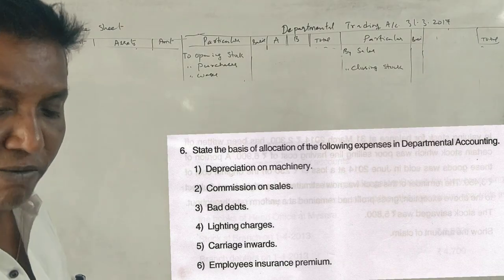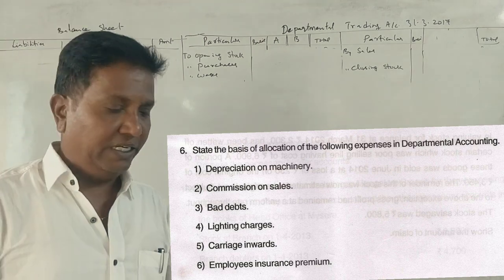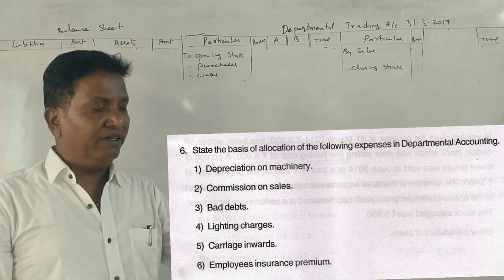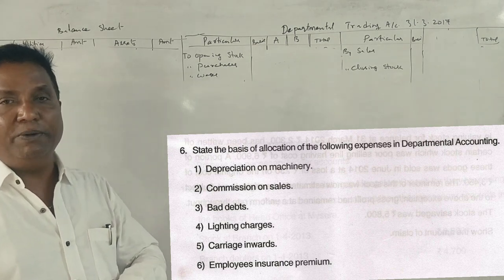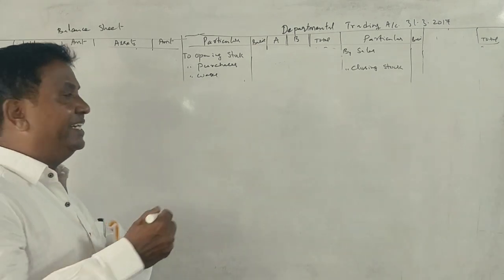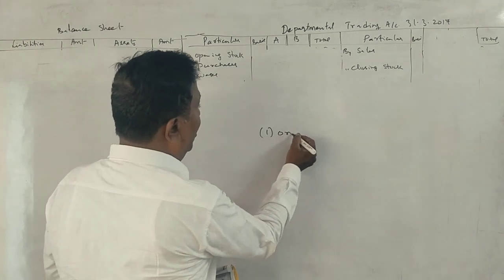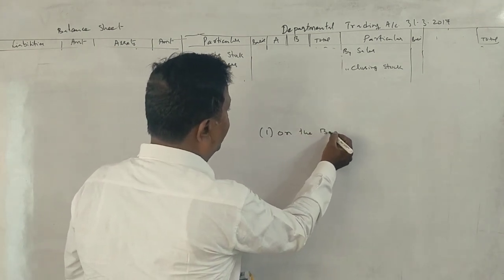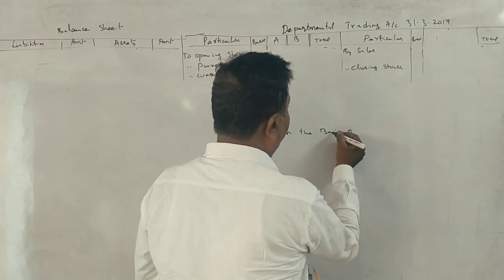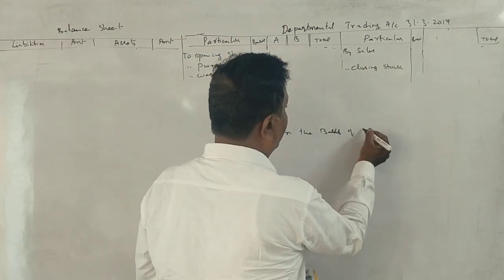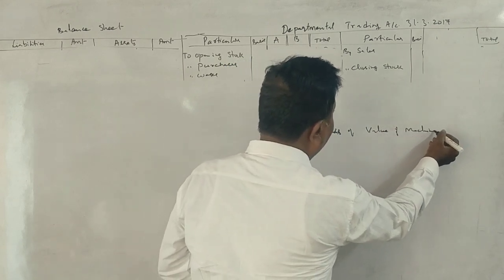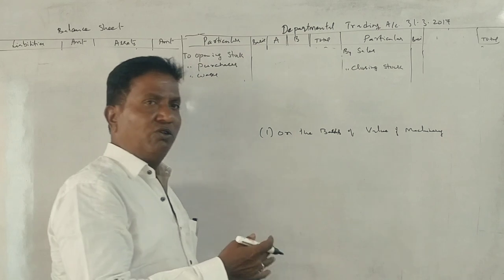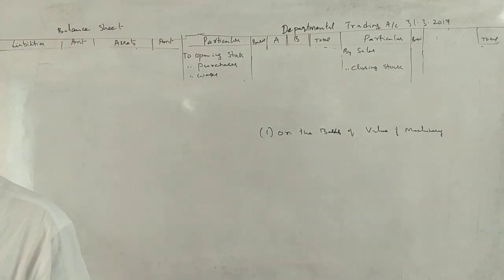2017, 5 marks simple question: State the basis of allocation of the following expenses in departmental accounting. First, depreciation on machinery — the answer is on the basis of value of machinery. The machinery value is allocated across departments, from Department A to Department B. That basis is correct.